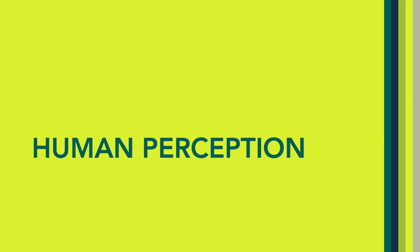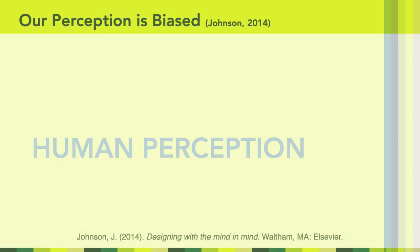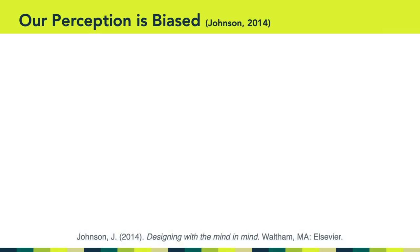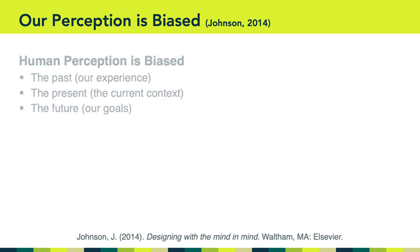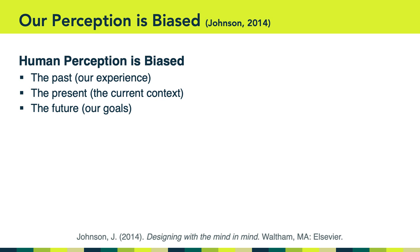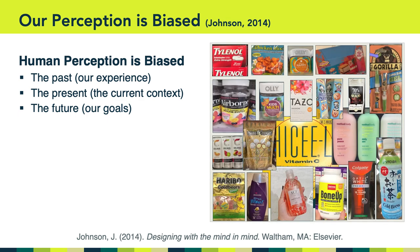Now I want to pivot to talk about this week's readings. Starting with the Johnson piece and this idea that human perception is biased. Johnson argues that human perception is biased due to our past, our present, and our future — in other words, our goals. Most of you touched upon these ideas in your analyses for Critical Reflection 1.